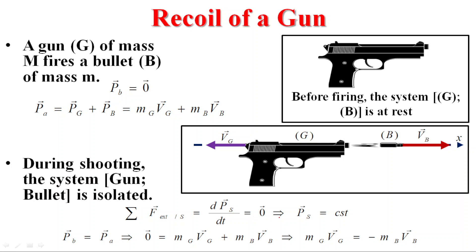For an isolated system, therefore P equals constant, meaning P before firing equals P after firing. Before firing, the linear momentum of the gun is zero since the gun is at rest. After firing the bullet, the linear momentum of the system is M_gun times V_gun plus M_bullet times V_bullet. Therefore, M_gun times V_gun equals negative M_bullet times V_bullet. This minus sign indicates that the gun will recoil, or move, in the opposite direction of the bullet.